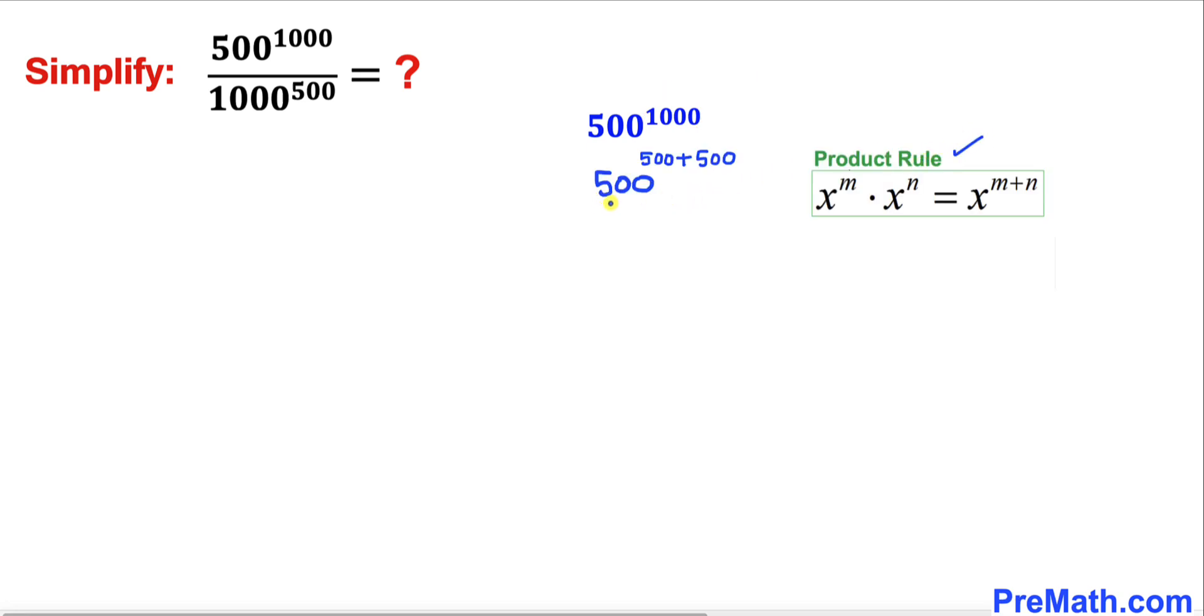According to this rule, this could be written as 500 to the power 500 times 500 to the power 500.